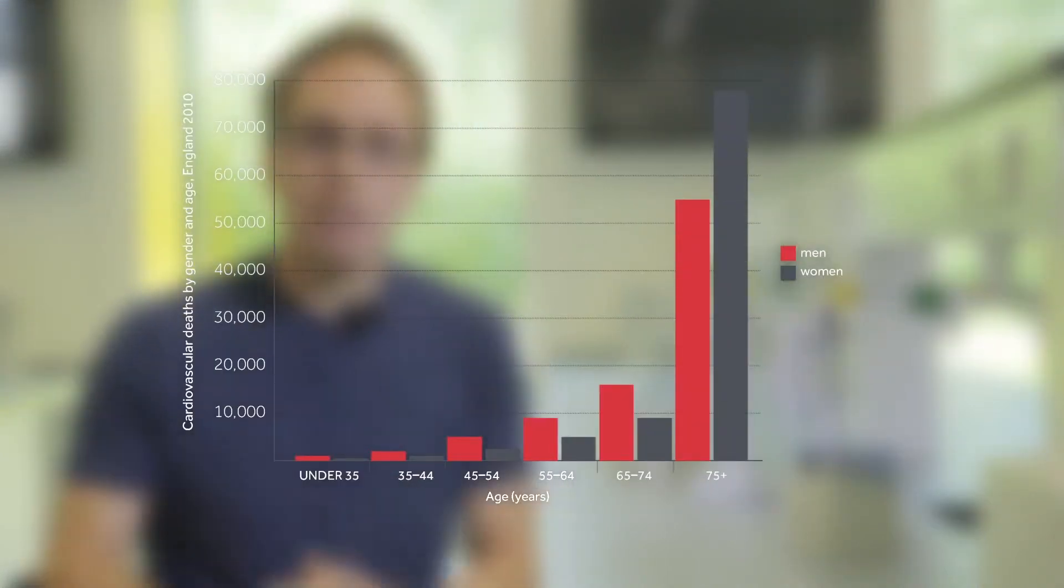Cardiovascular disease is the biggest single cause of death in the developed world. According to the British Heart Foundation figures, in 2010, 180,000 people in the UK died of cardiovascular disease. This accounted for a third of all the deaths in that year.